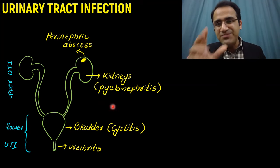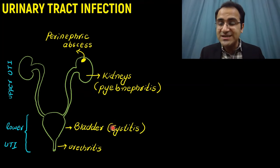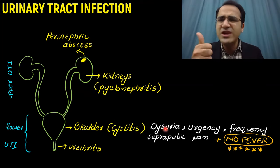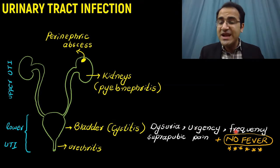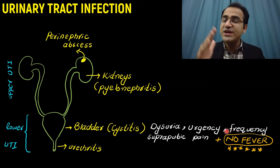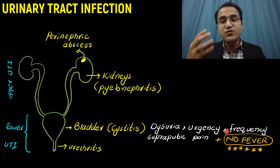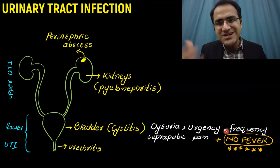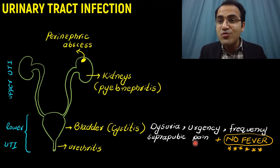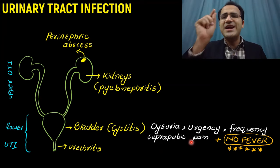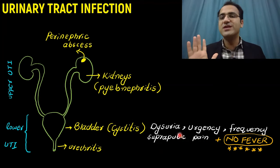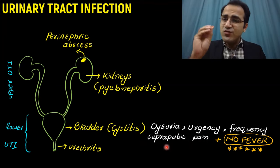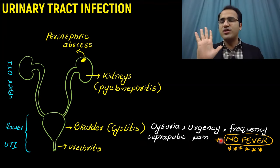Starting with cystitis symptoms: cystitis presents with dysuria, burning micturition, urgency — the patient will have a quick urge for urination — and frequency, meaning the patient urinates frequently. There will be suprapubic tenderness when you palpate the suprapubic area. A very important point is that there is no fever in cystitis — this is a key differentiating point from pyelonephritis.